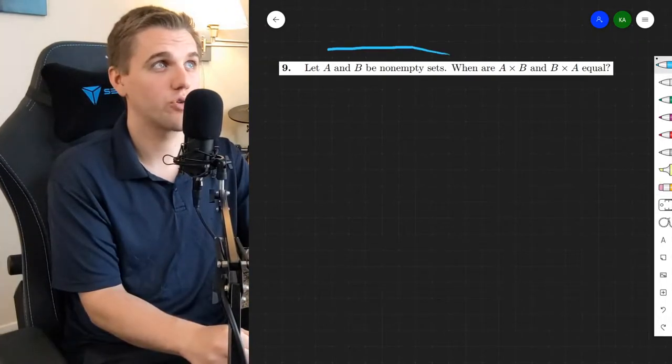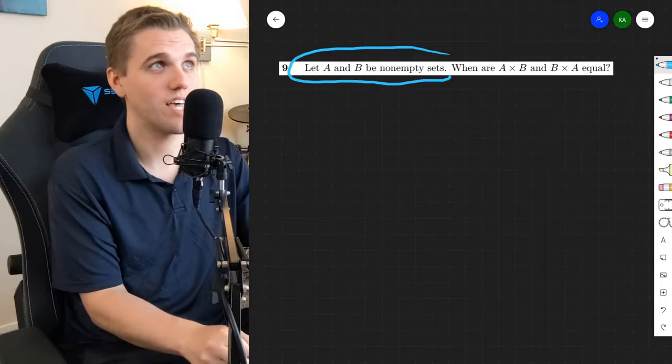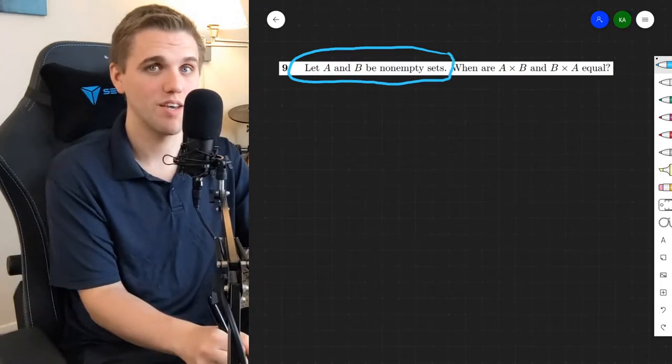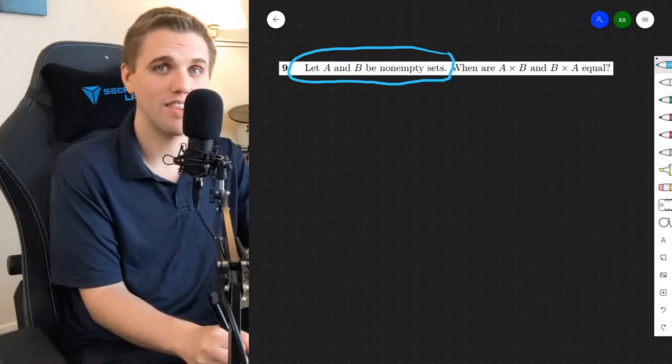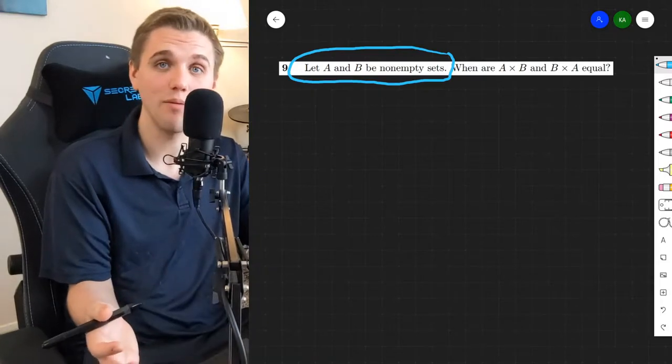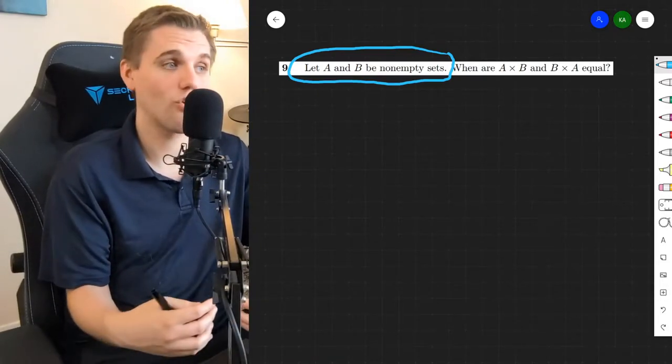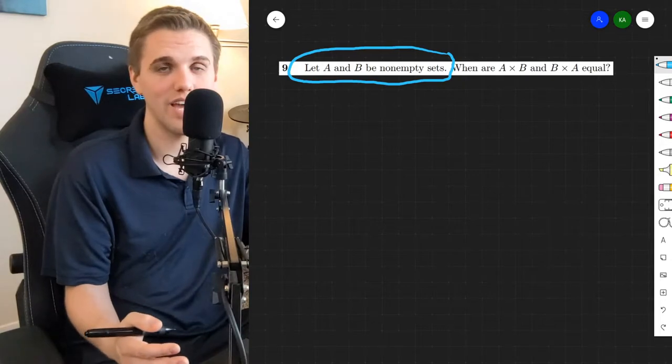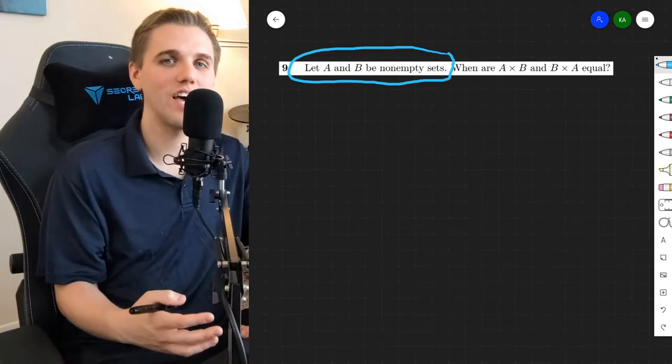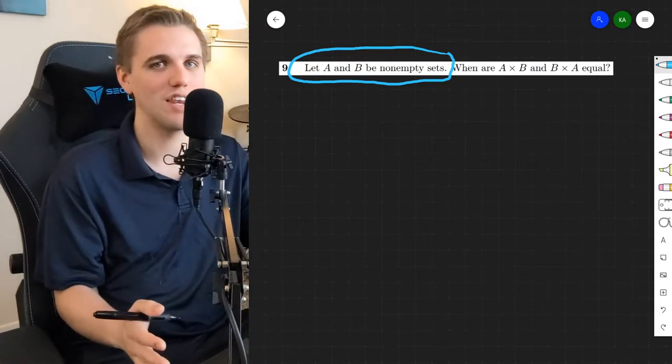Now something that's really crucial in this problem is that A and B are both non-empty. When you have a non-empty set, that means you can grab an element from that set. You can grab all of the elements from that set. Having the property that a set is non-empty is really convenient in problems.